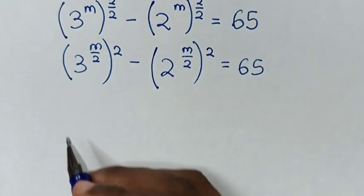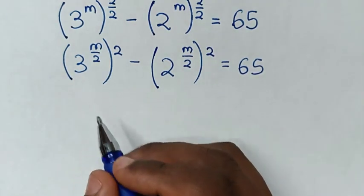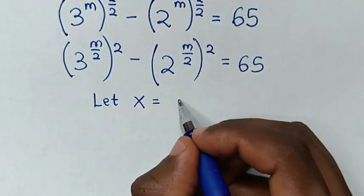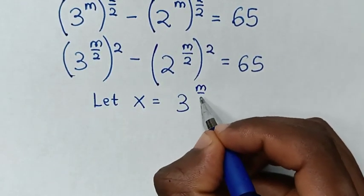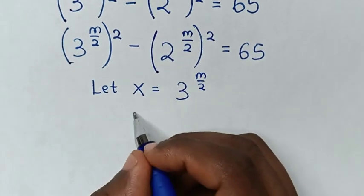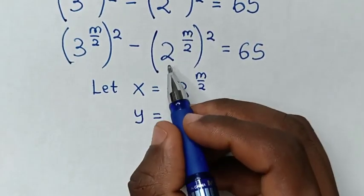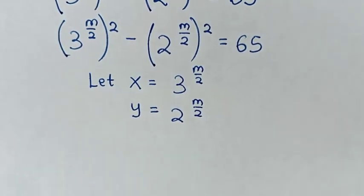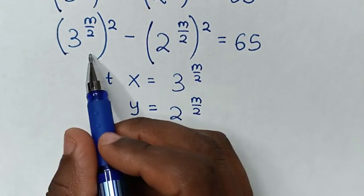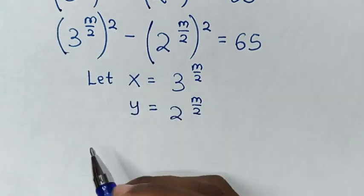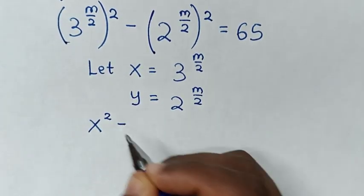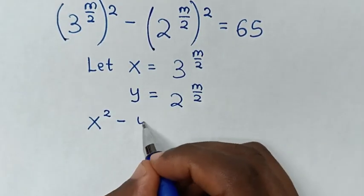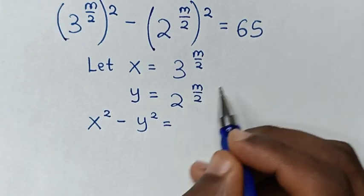Then in the next step, we let 3 power of m over 2 as x, and we let y equal to 2 power of m over 2. So when we substitute, 3 power of m over 2 becomes x squared, then minus y squared, is equal to 65.